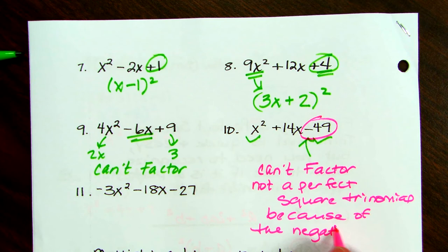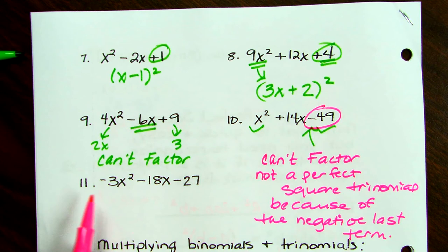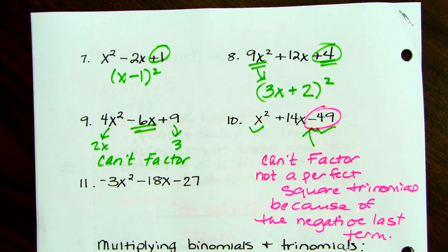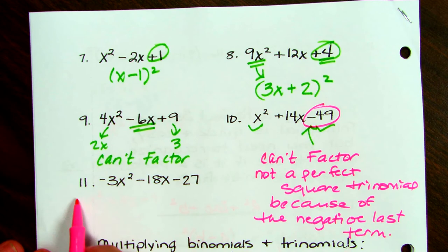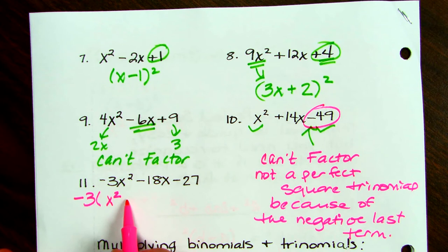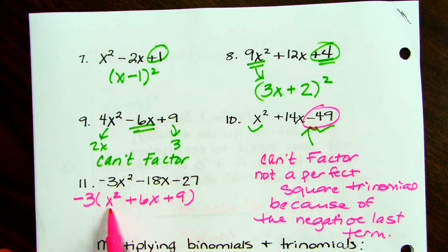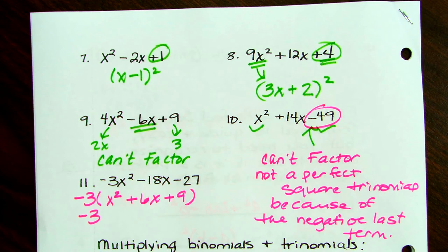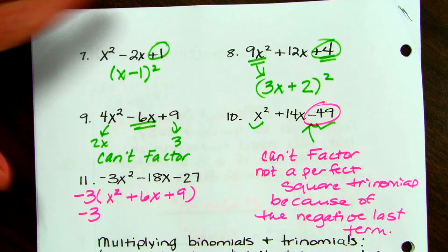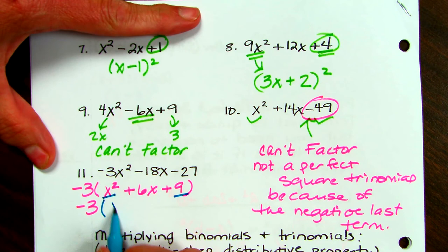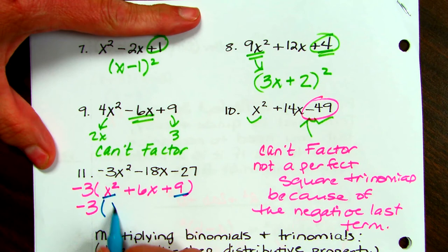Let's look at this last factoring example — it starts with a negative 3, and it's a trinomial. Remember, the first step in factoring is taking out the GCF. So I factor out negative 3, leaving X squared plus 6X plus 9 — because negative 3 times X squared is negative 3X squared, negative 3 times 6X is negative 18X, and negative 3 times 9 is negative 27. The negative 3 comes along. The remaining trinomial looks like a perfect square trinomial. The square root of X squared is X, square root of 9 is 3, and X times 3 times 2 is 6X — so it factors into X plus 3 squared. That multi-tier factoring is part of what makes it Algebra 2.